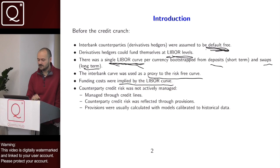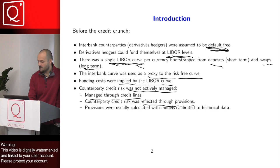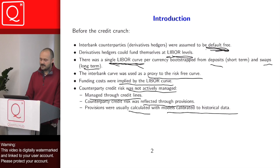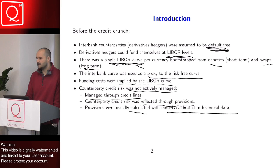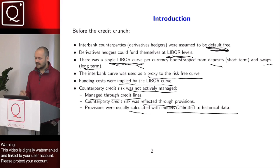Funding costs were always included and implied by the LIBOR curve. Regarding counterparty credit risk, it was not actively managed — it was managed through credit lines and reflected through provisions. These provisions were calculated with models calibrated to historical data. Default probabilities were implied from historical default probabilities as a function of ratings — internal ratings or ratings published by Moody's, Standard & Poor's, and so on. The models used to calculate credit exposure could be calibrated to historical data, not calibrated to the market.